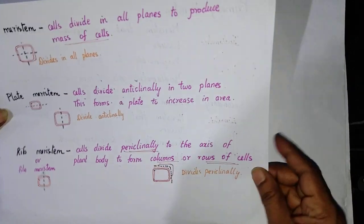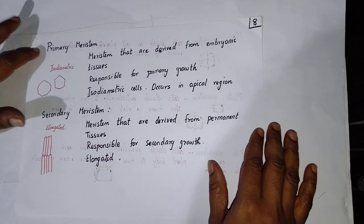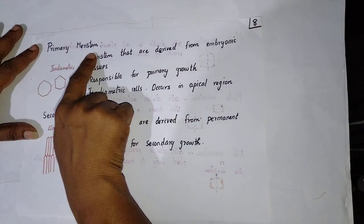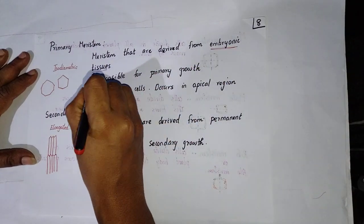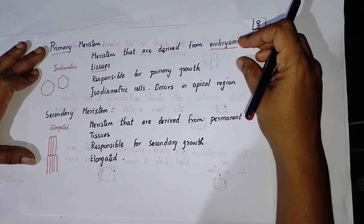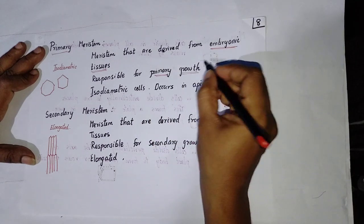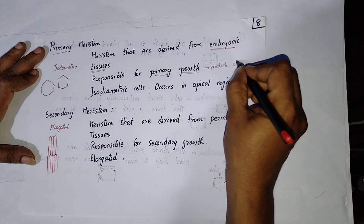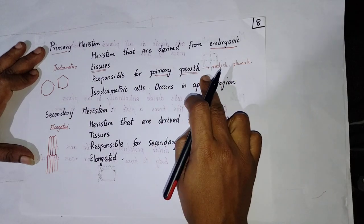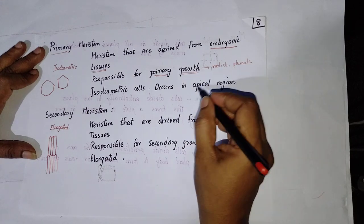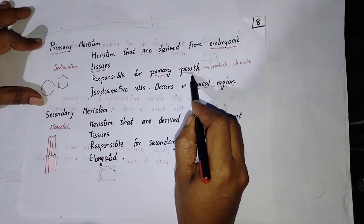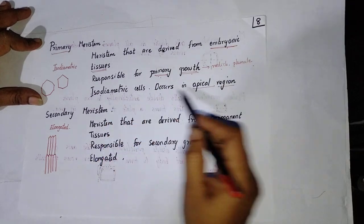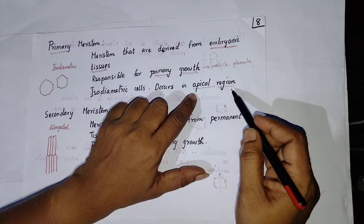Moving on to the next classification based on the types of meristems, we have primary meristems and secondary meristems. Primary meristems are derived directly from the embryonic tissues — they are the first formed meristematic cells. They are responsible for primary growth, which includes the formation of the radicle and plumule. They are isodimetric cells and occur in the apical region.